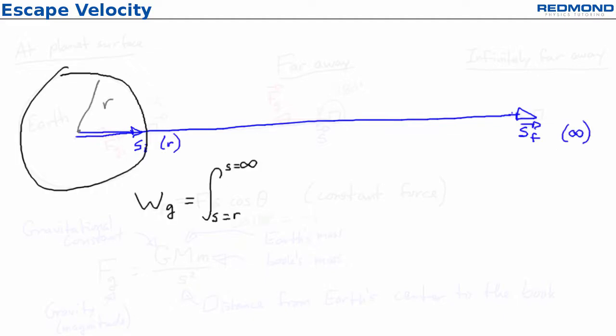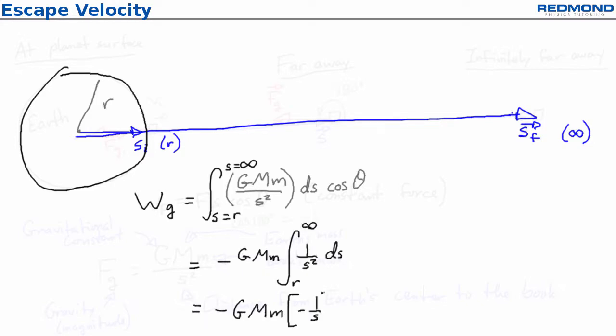Evaluating this integral is actually fairly easy. G, big M, and little m are constants, as is cosine of 180 degrees, and I bring them out of the integral, which leaves only 1 over s squared ds. I can integrate this, getting negative 1 over s, and then evaluate to find that the total work done by gravity when the book moves from R to infinitely far away is equal to negative GMm over R.